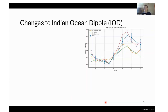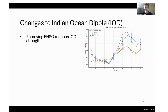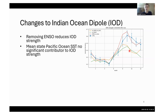I'm going to talk about the changes to the IOD. We looked at the Dipole Mode Index. Here in blue I've plotted the control, and then in the other colours are the other experiments. These error bars are based on bootstrapping confidence intervals. What we see is that removing ENSO in both bias and no-bias cases reduces the strength of the IOD — it's not a significant contributor to IOD strength.